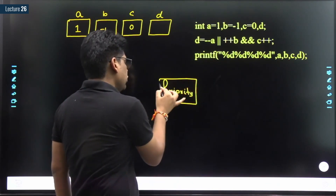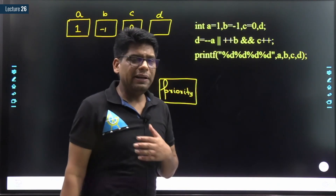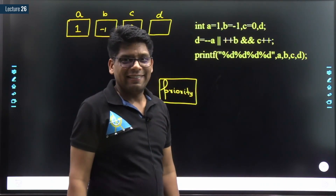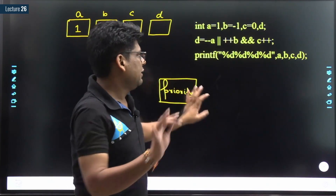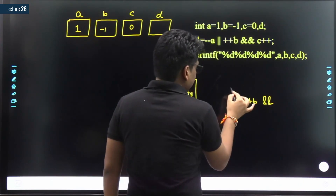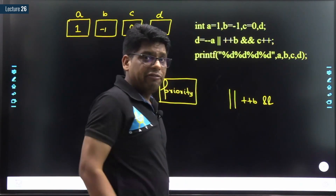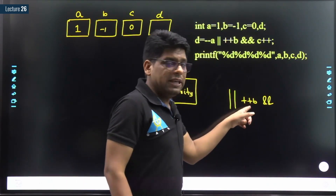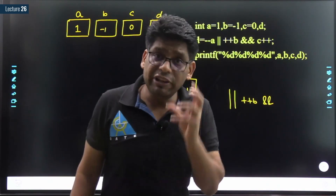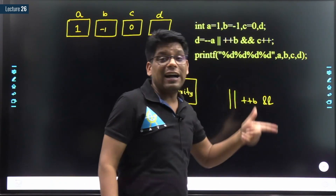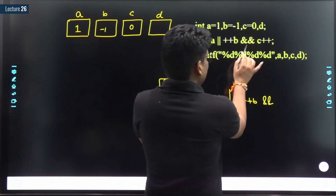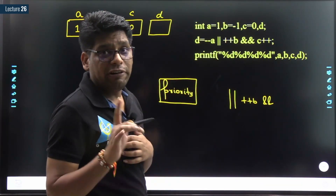We have four variables: the value of a is 1, the value of b is minus 1, the value of c is 0, and the value of d is garbage. We have an OR and an AND operator. Now, what does priority mean? If an operator is associated with two operators — for example, ++b here has OR on its left and AND on its right — which operator does it belong to? This is where priority comes in. The priority of AND is more than OR.